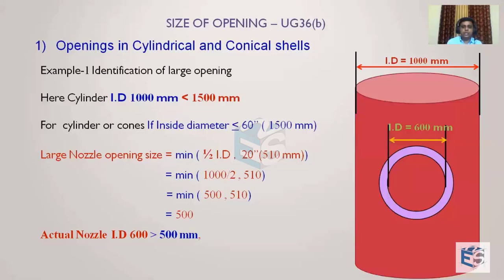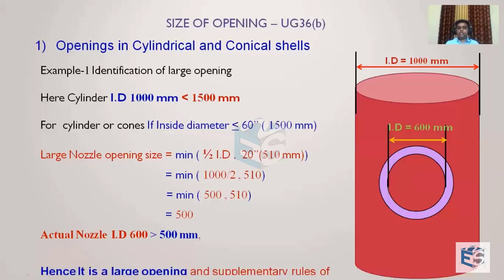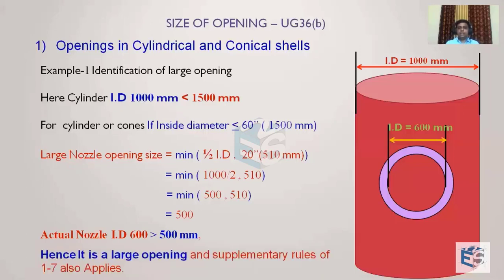The actual nozzle ID is 600mm. Remember, if there is any corrosion allowance, we must consider the corroded opening — for example, a 2mm corrosion allowance makes it 604mm. Since no corrosion allowance is considered here, the ID is 600mm. Since 600mm > 500mm, this is a large opening and supplementary requirements of Appendix 1-7 must be satisfied in addition to UG-36 through UG-43.